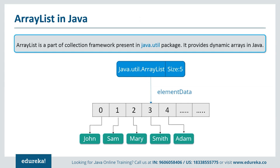Some key points to note: ArrayList is initialized by a size; however, the size can increase if the collection grows or shrink if objects are removed from the collection. ArrayList allows us to randomly access the list. ArrayList cannot be used for primitive types like int or char — to access those, we need a wrapper class for such cases.